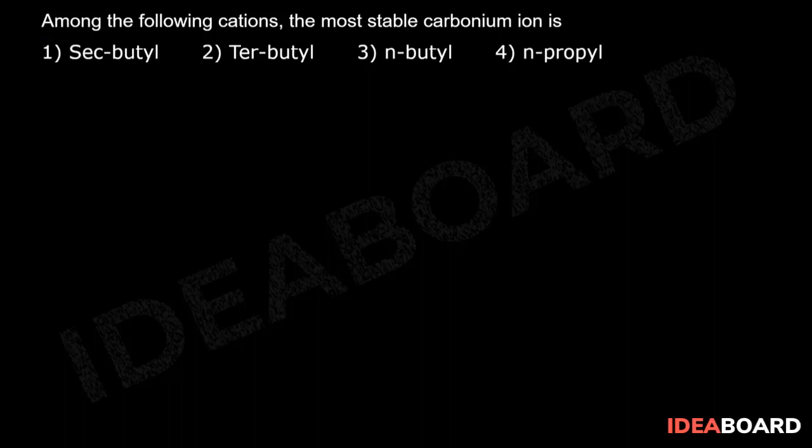Among the following cations, the most stable carbonium ion is: First one, secondary butyl CH3CH2CHCH3 plus, the secondary butyl cation.